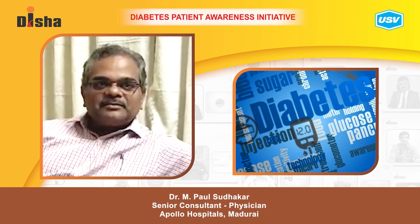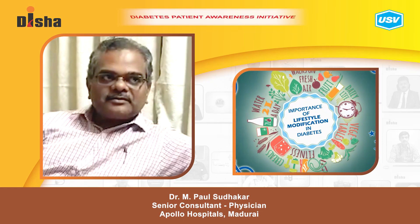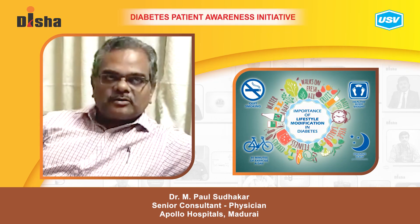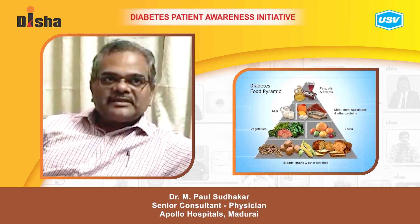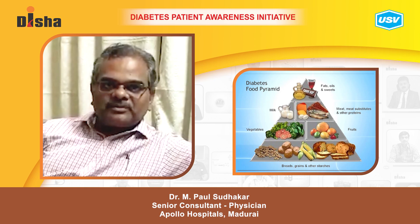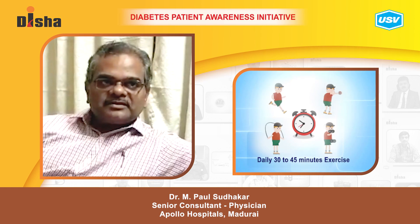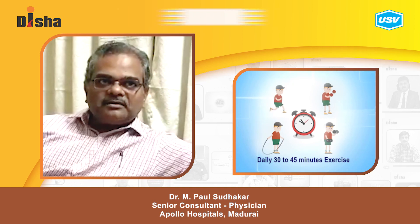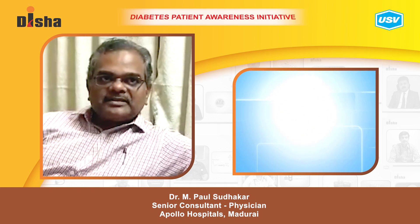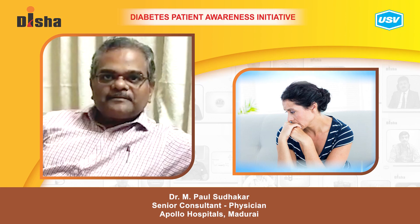Now I want to talk about lifestyle modification in the management of diabetes. There are three key changes: diet control, exercise, and stress management. The ideal diet is balanced — 50% carbohydrates, 25% protein, and 25% fat. For exercise, 30 minutes of aerobic activity such as brisk walking, jogging, or swimming, at least five days per week, is very important. For stress management, yoga, meditation, and walking are recommended.